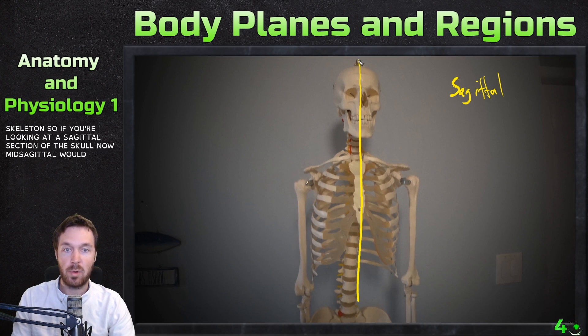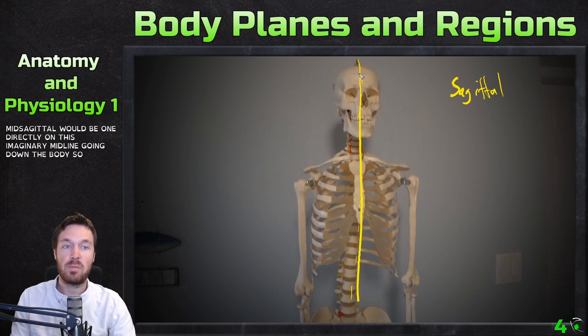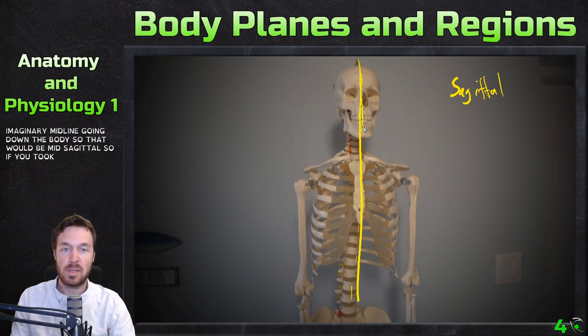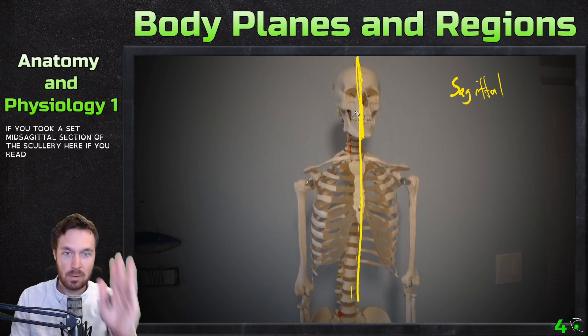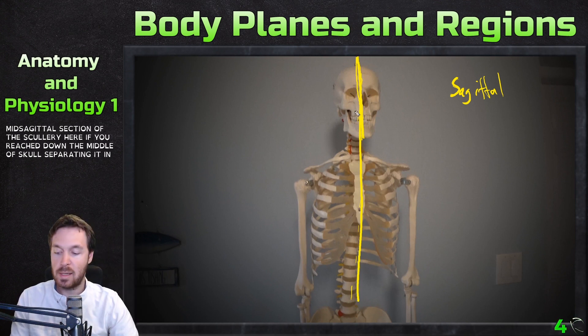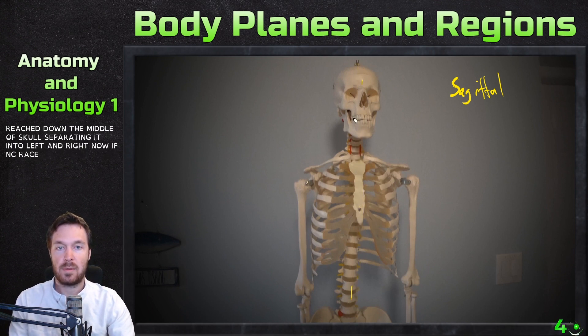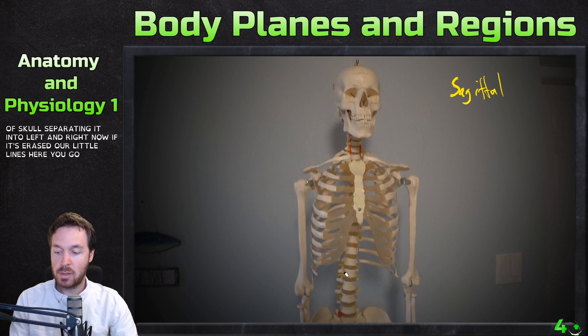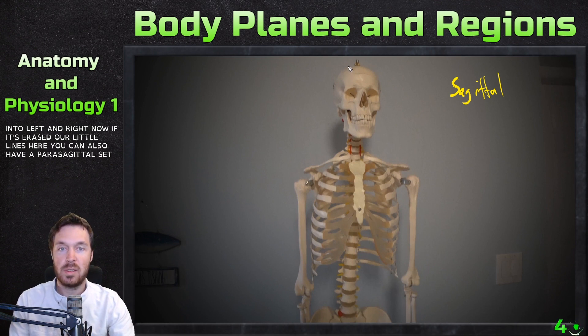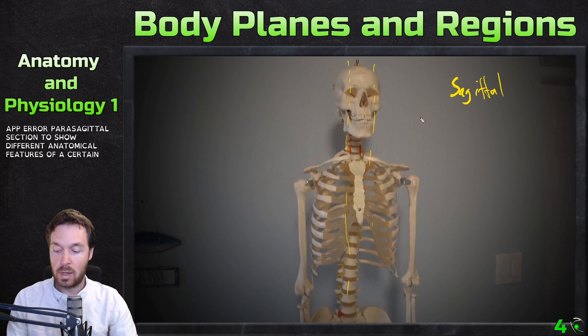A mid-sagittal section would be one directly on this imaginary midline going down the body. So if you took a mid-sagittal section of the skull, it would be right down the middle of the skull separating it into left and right. You can also have a parasagittal section, which means it's next to the sagittal. Sometimes you might see a parasagittal section to show different anatomical features of a certain organ or so forth.